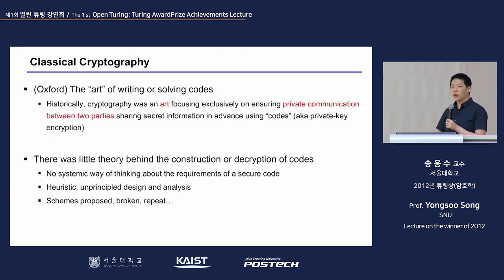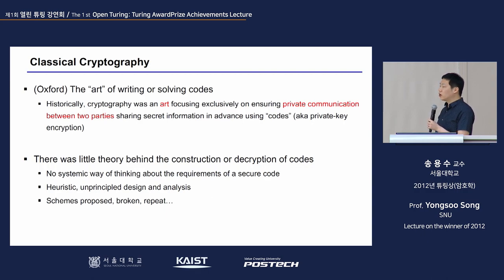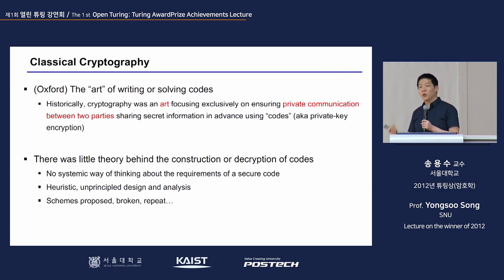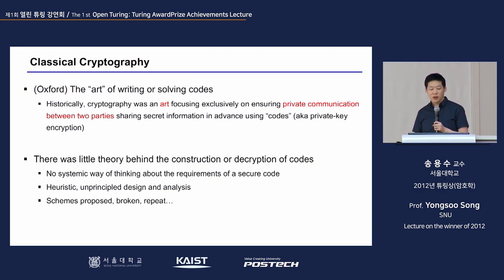To meet the goals of private communication, many things such as codes were created — what we now call private key encryption. In the past, there was very little theory behind the encryption of codes. It was not systematic; cryptography was often seen as heuristic and unprincipled design analysis. Because there was no theory behind it, schemes would be proposed, broken, and then repeated.